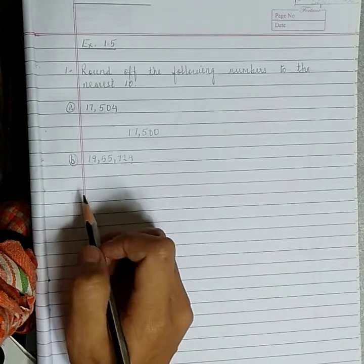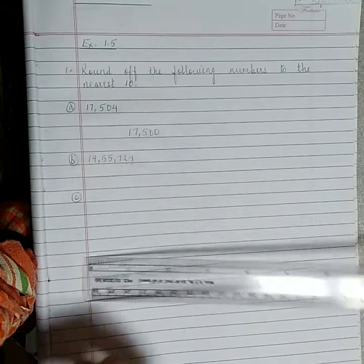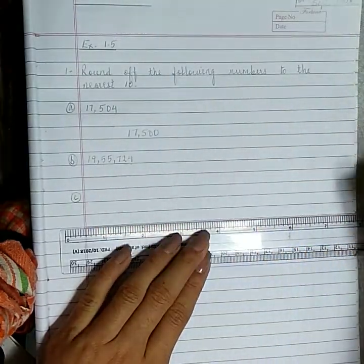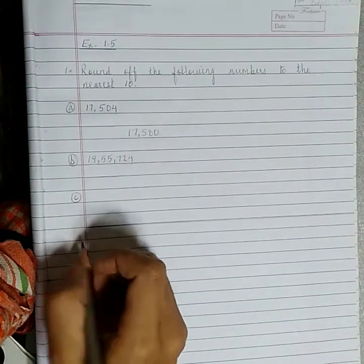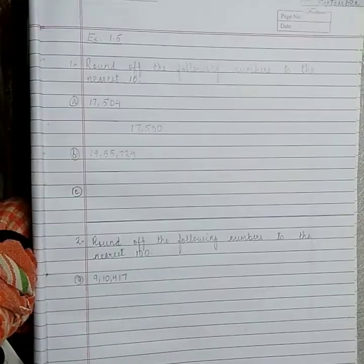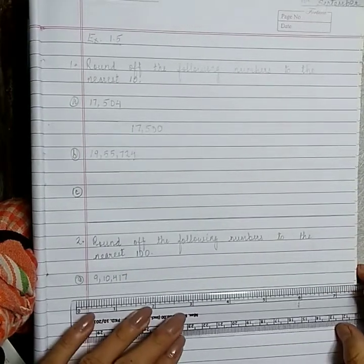You will do question number C. And after you finish question number C, you will draw a long line and then copy down question number 2.